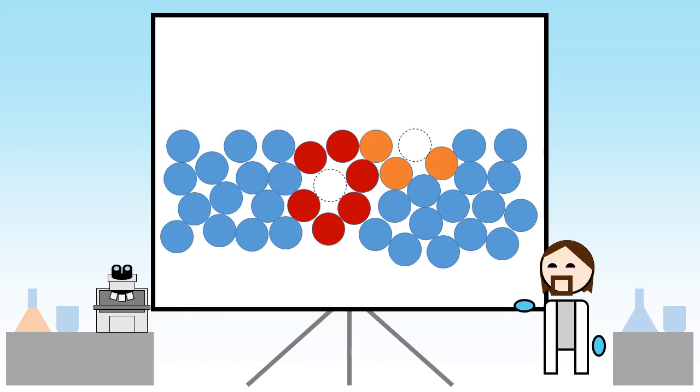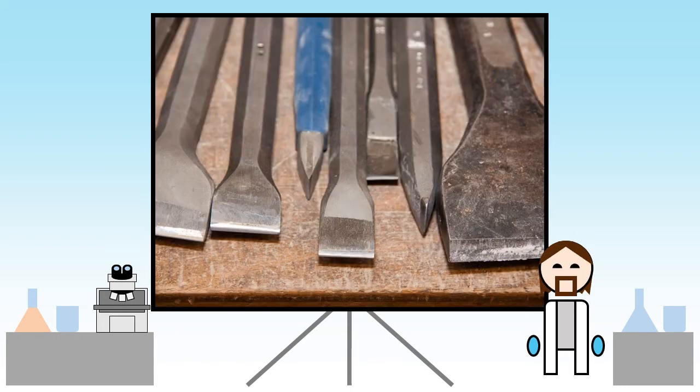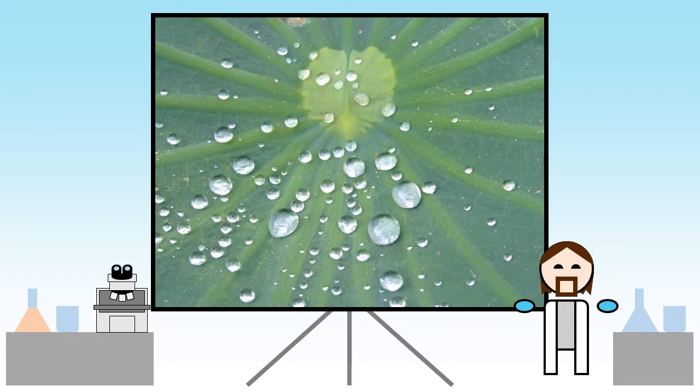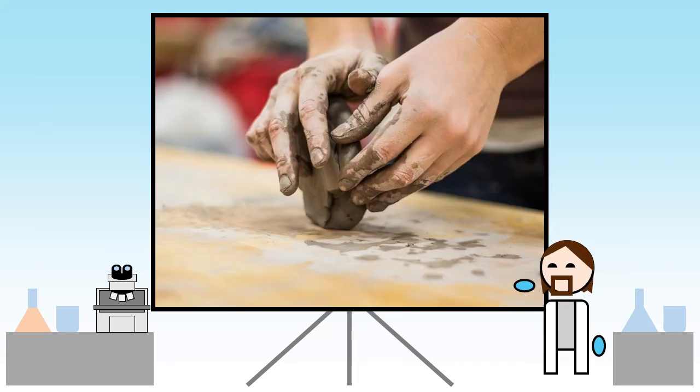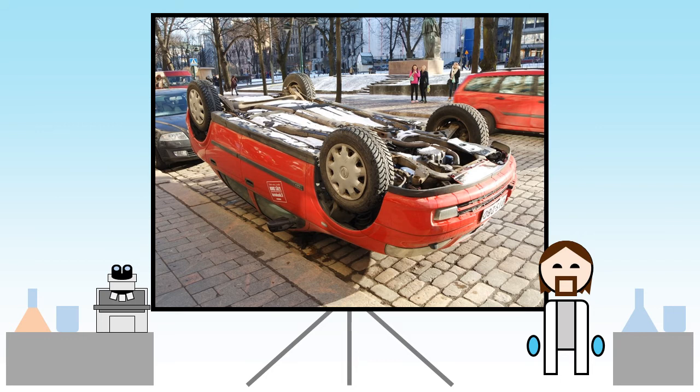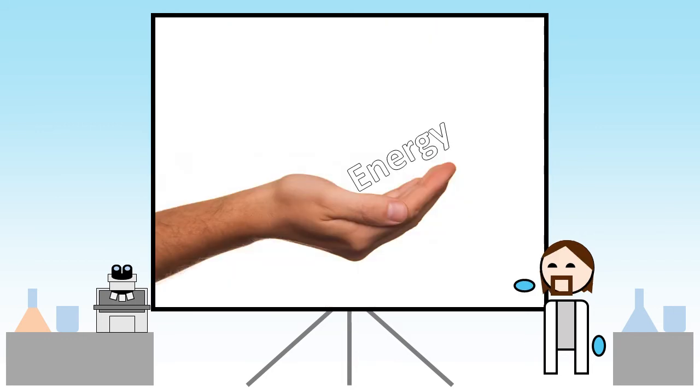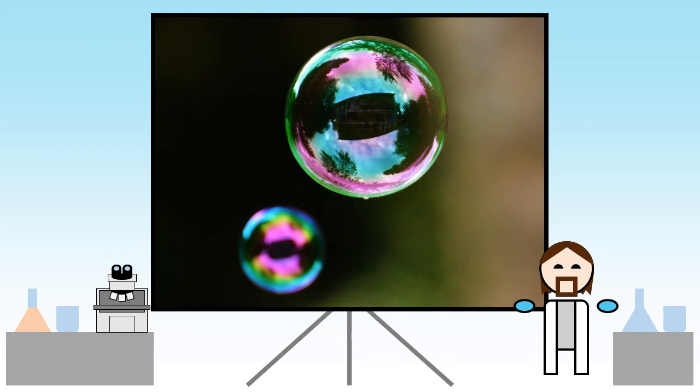This means that to have created that surface in the first place, you have put in some energy. This is what we're talking about when we say surface tension. Making extra interfaces costs energy, and the reverse is also true: reducing the amount of surface gives back energy. This is why soap bubbles are spherical—a sphere has the lowest surface area compared to the fixed volume it contains.